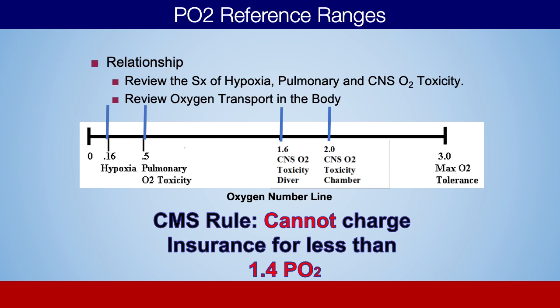This chart shows a gradient of PO2. On the low end, around 0.16 — if the PO2 is 0.16 or below, that's considered hypoxia. A PO2 of 0.21 is where we live right now. Air is 21% oxygen, 79% nitrogen, so 0.21 is the pressure of oxygen in the air we are currently breathing.